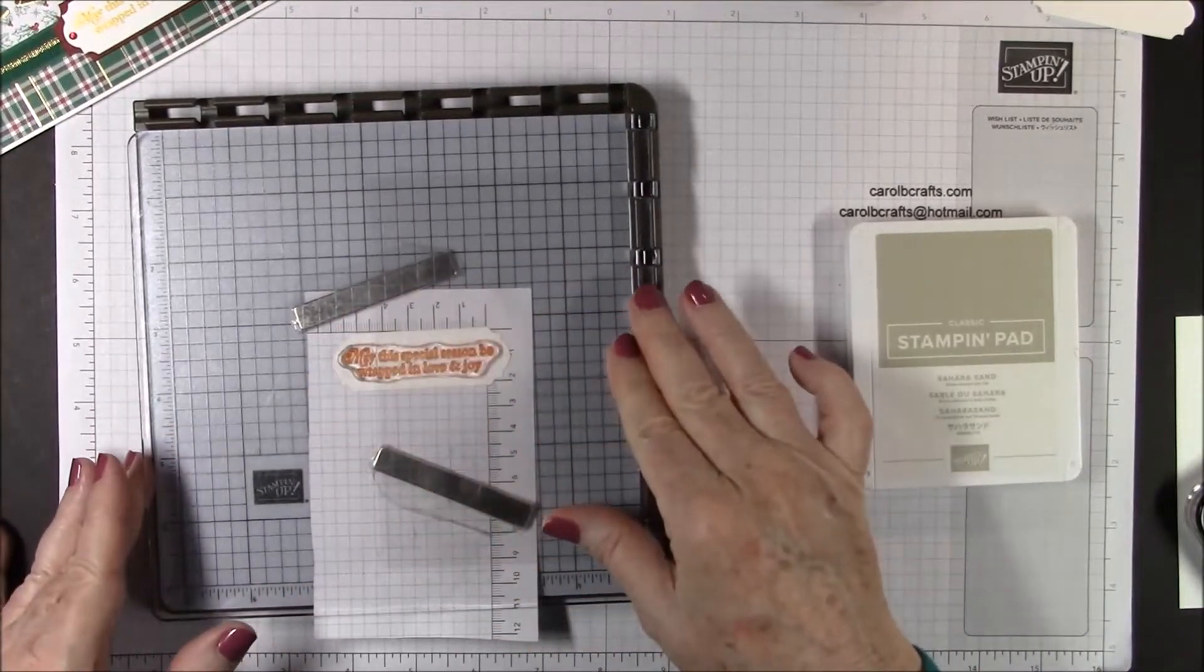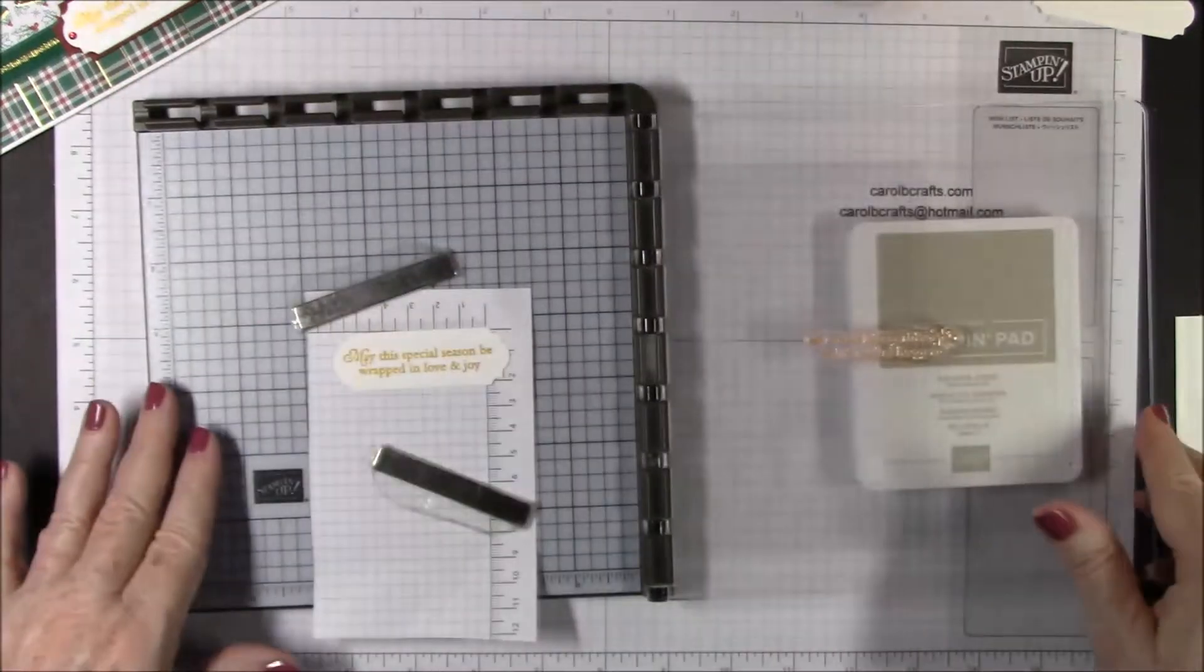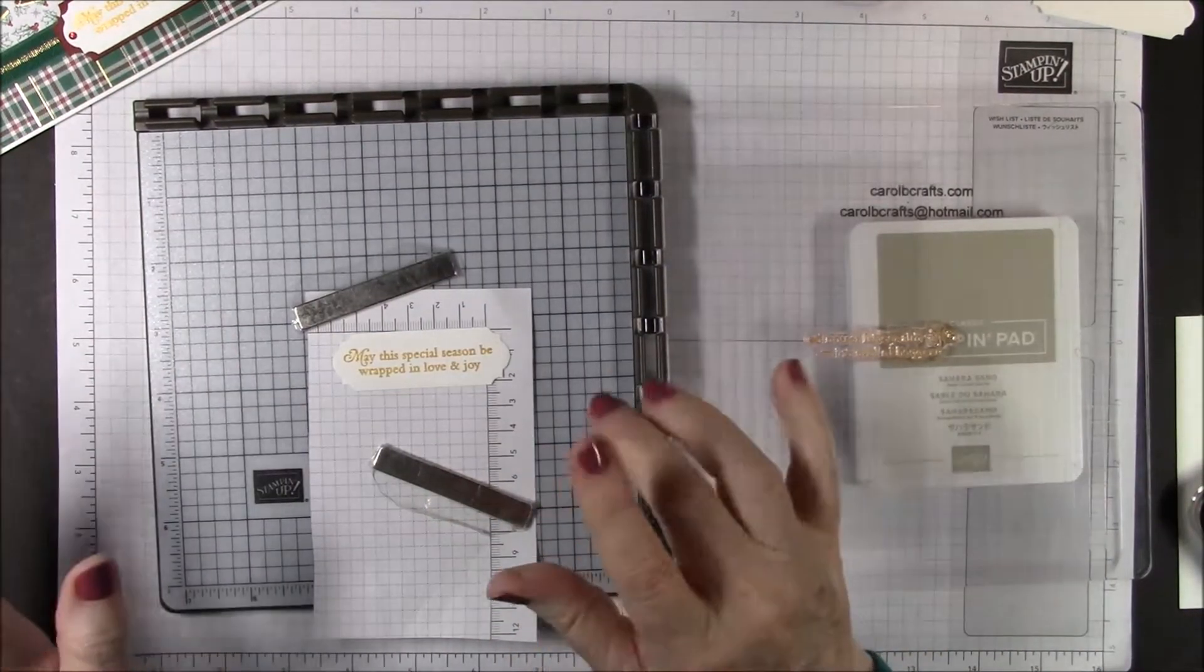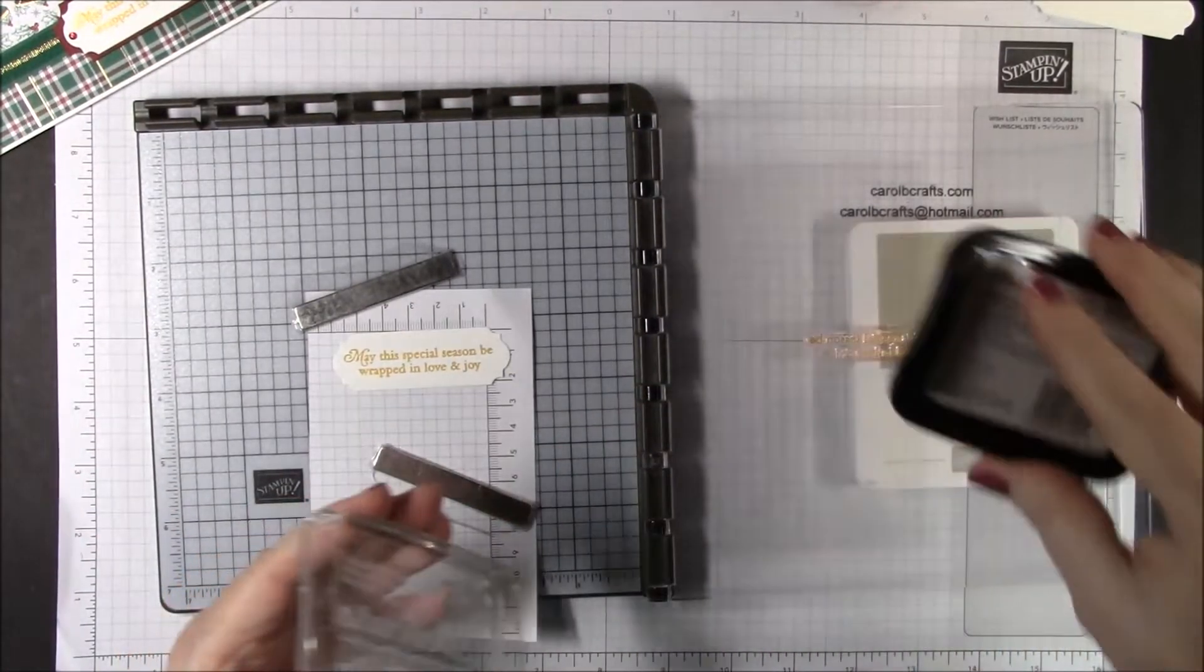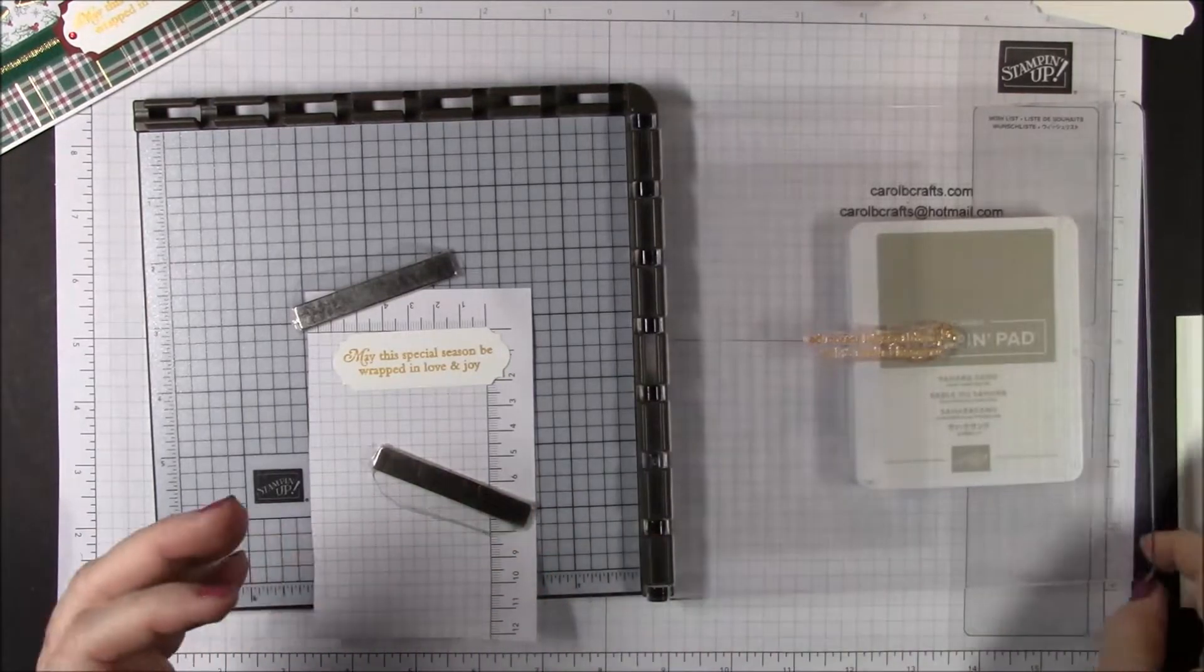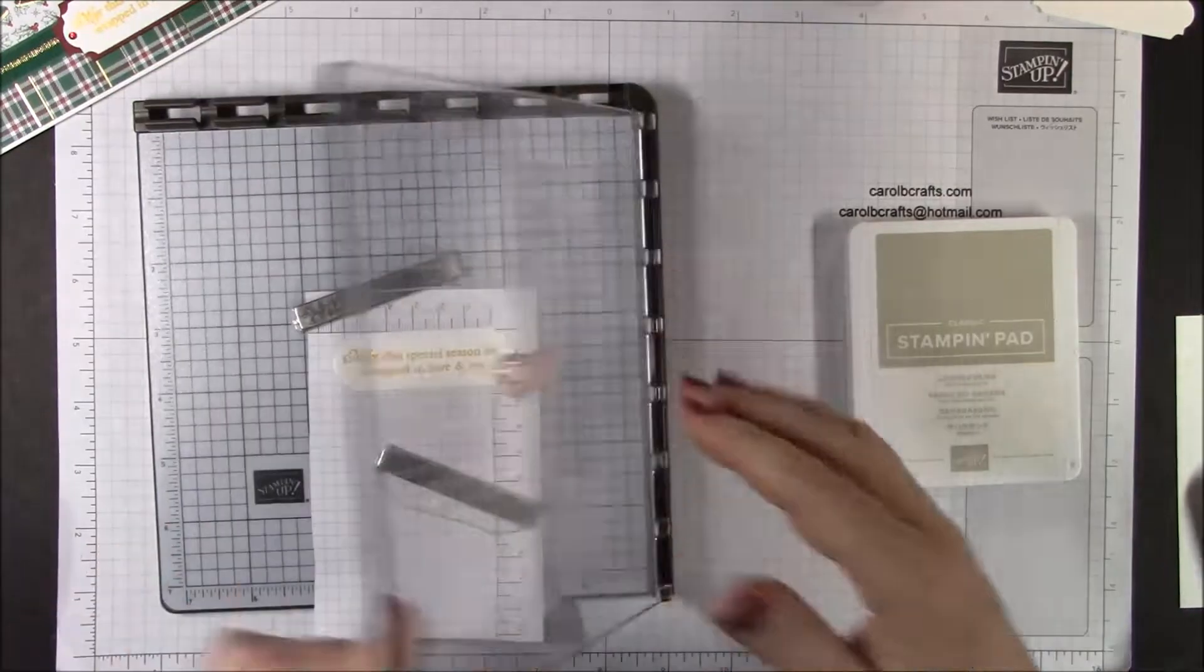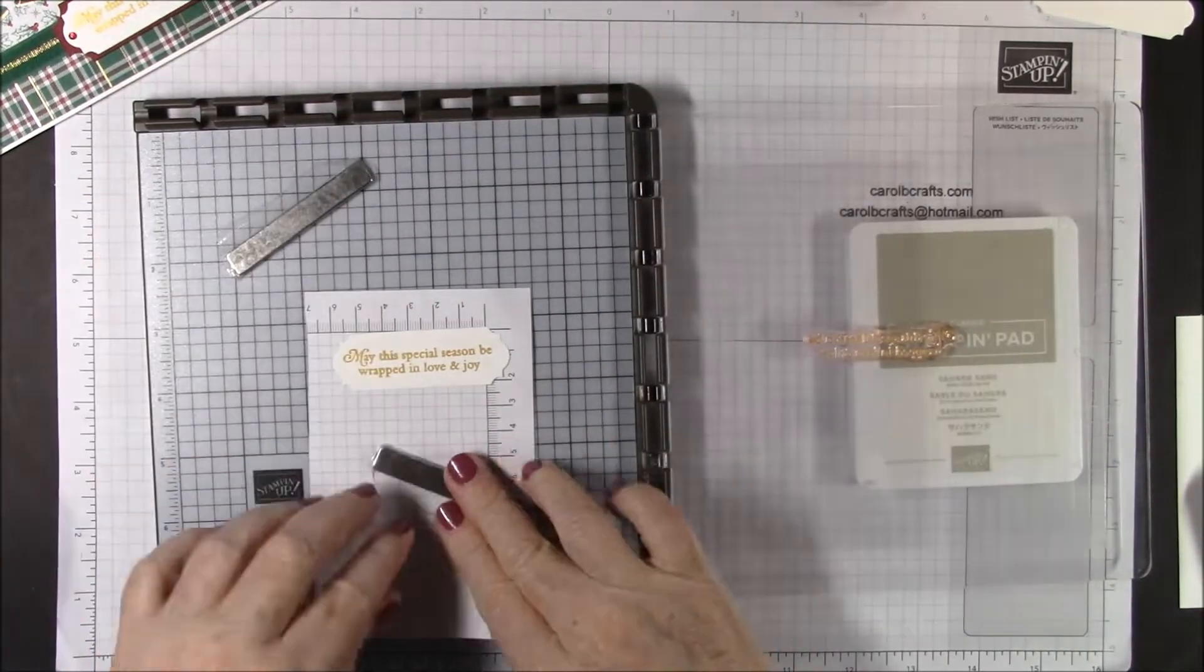I'm going to pull it up gently as it is photopolymer. I'm happy with that, maybe just a light one more light touch there just to make it stand out a little more. Okay, that looks great. We're going to clear all this away and clean off our stamp.